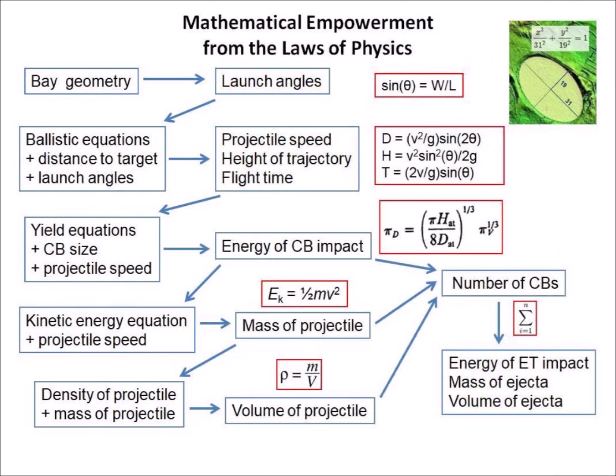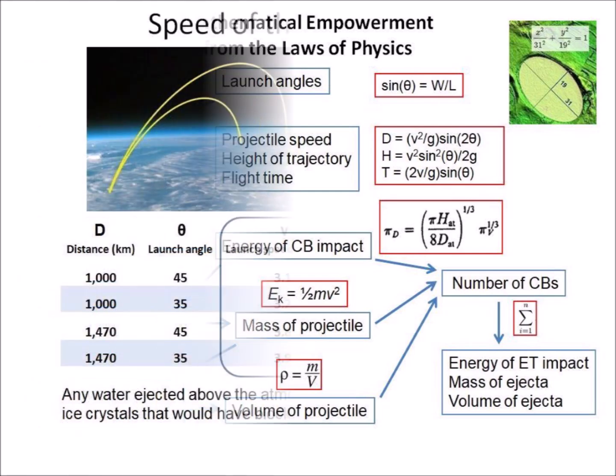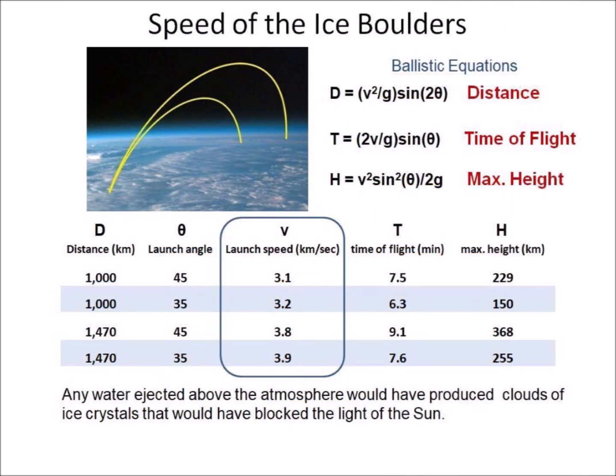The elliptical geometry of the Carolina Bays was the starting point for applying mathematical methods of physics to deduce information about the proposed extraterrestrial impact and its icy ejecta. Bay geometry corresponds to launch angles, ballistic equations determine projectile trajectories, and yield equations correlate bay size to projectile size. The ballistic equations indicate that glacier ice boulders needed speeds of 3 to 4 km per second to reach Nebraska and the East Coast.